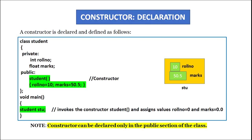A constructor is declared and defined as follows. We take an example of a class student with private data members roll number and marks. In the public section, we define a constructor of this class. The constructor has the same name as that of the class followed by parenthesis. The body of the function contains the initialization statements of the data members. Here, we have assigned the value 10 to roll number and 50.5 to marks.